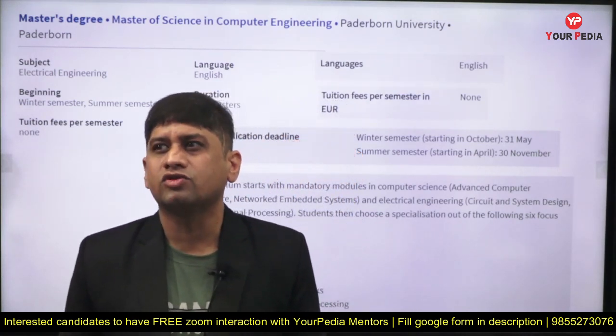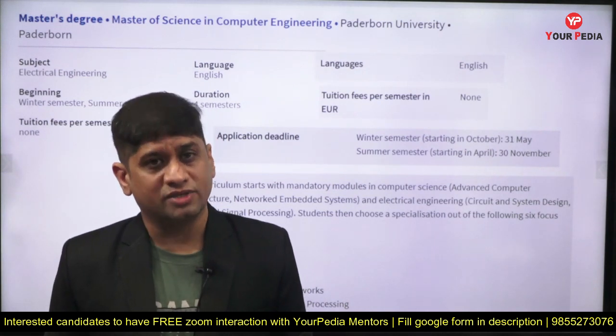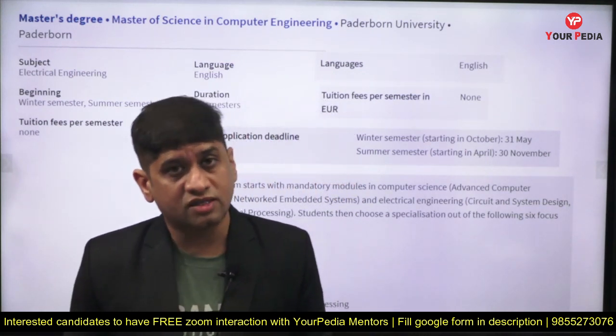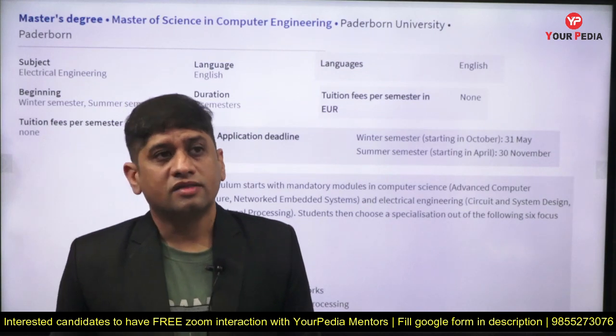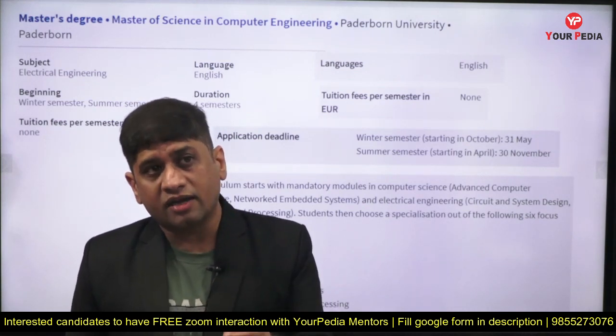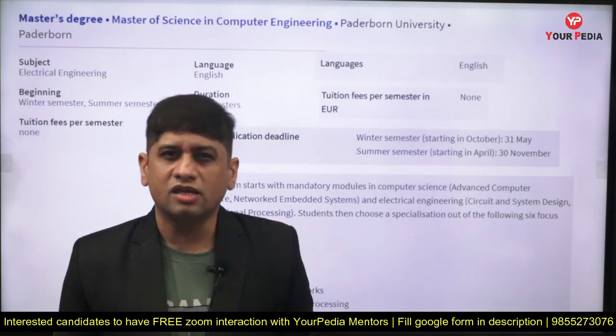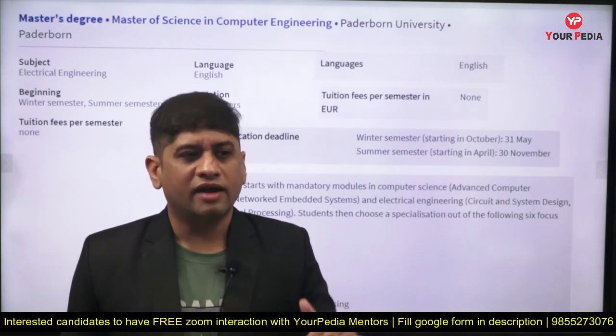For two years — four semesters of MS (though some courses are three semesters) — you need to incur expenditure of around 15 lakh rupees. But if you start working on or off campus, you can reduce this to maybe six or seven lakh. Loans are easily available, and job opportunities are also there.